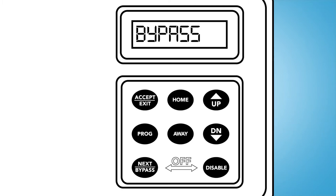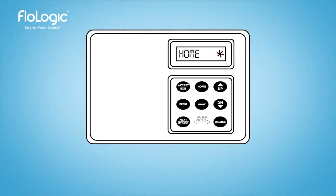To disable the system's flow monitoring, press the disable button followed by the accept exit button. When water is flowing at or above the flow sensitivity level, also called the drip rate, you will see a pinwheel graphic rotating on the screen indicating a flow event is being monitored. When the flow stops, the pinwheel disappears and the timer resets.